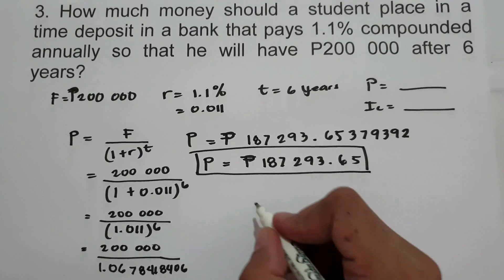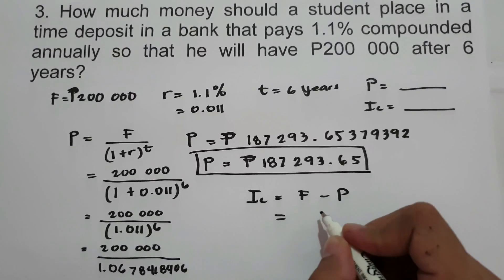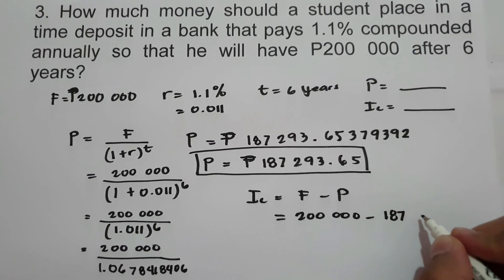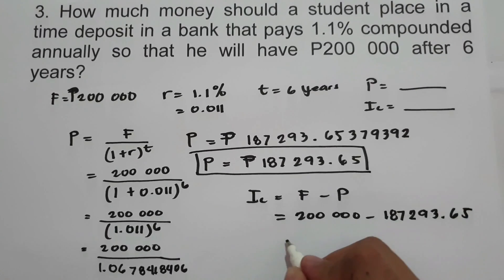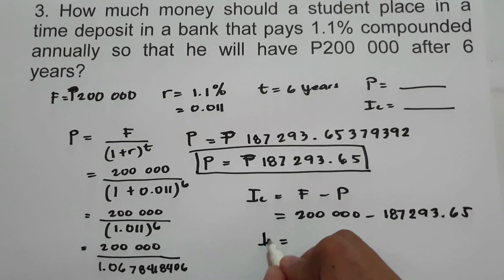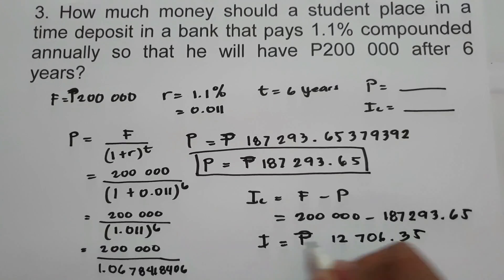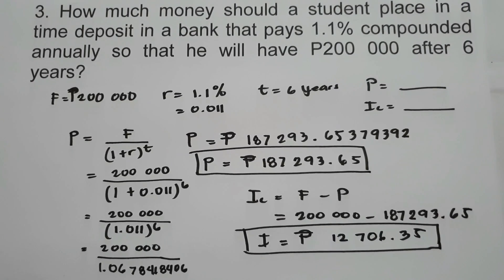The compound interest is future value minus principal. Our future value is 200,000 minus the principal of 187,293.65. Subtracting, 200,000 minus 187,293.65, the interest is 12,706.35. So this will be our answer. I hope you will learn from this lesson. Thank you so much for watching, and God bless us all.